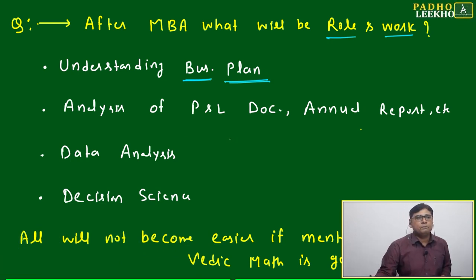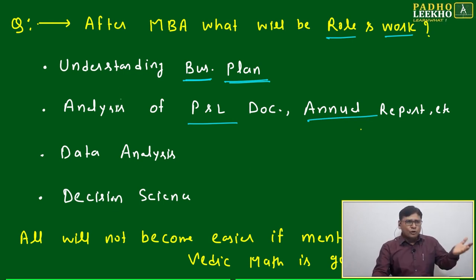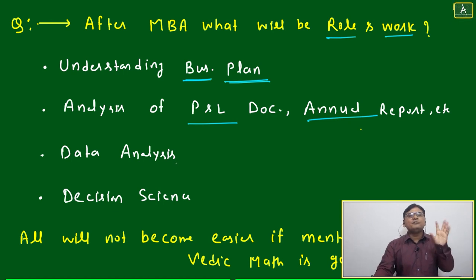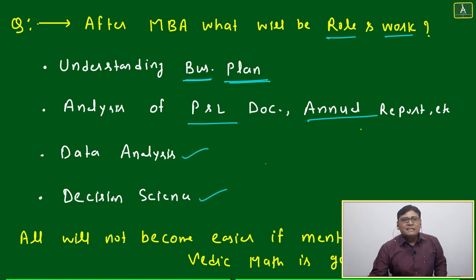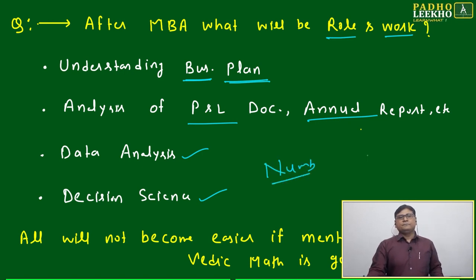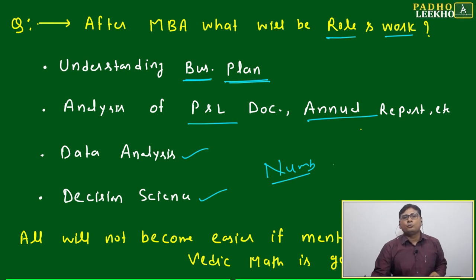Business plan analysis, P&L documents, annual reports — all this will be your day-to-day work. I am not mentioning all the works and responsibilities, just a few. Data analysis, decision science — all are just a representation of numbers, nothing else. If you are aware about the P&L document, the profit and loss document, or the annual report of any company, what will be there? Numbers only.